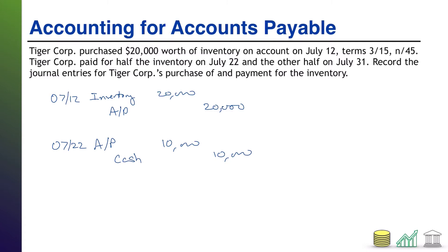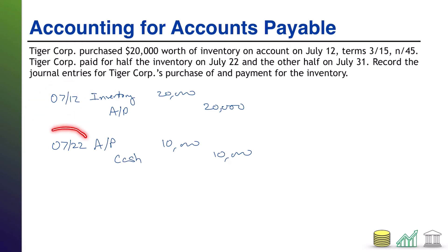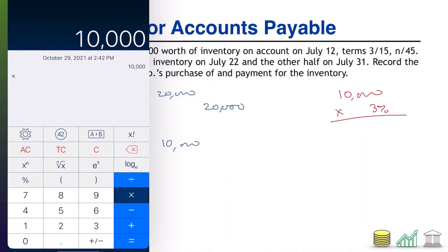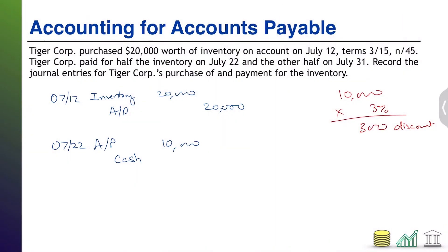However, this problem is a little bit more complicated because it offered some discount terms — specifically a 3% discount if paid within 15 days. We bought the goods on July 12th, and it is now 10 days later, July 22nd. Therefore, we are within the 15-day window and are going to get a cash discount on the portion we're paying. So we still debit half the payable balance, but instead of $10,000 cash, we calculate: $10,000 times 0.03 equals $300 discount. Therefore, we only pay $9,700 cash.